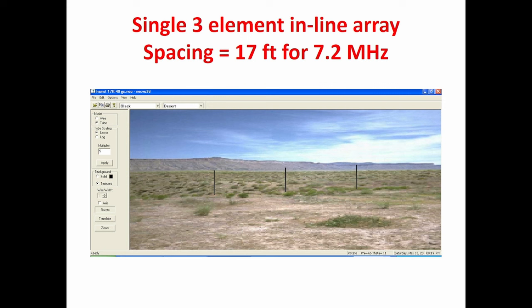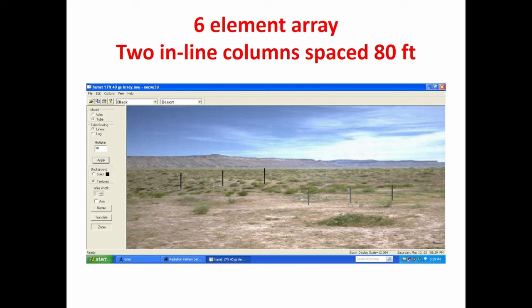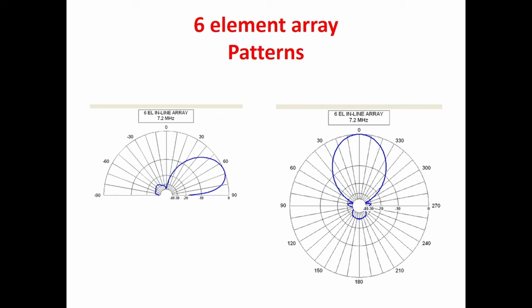Here's a GNEC model of the three-element inline array — you can make it look realistic in GNEC. The pattern from three inline hamsticks at 17-foot spacing is quite good: down 30 dB in elevation and 30 dB off the back. Then I spaced two of these arrays 80 feet apart — six elements total in two inline columns — and the pattern in azimuth is really excellent as well. It's very close to, and maybe even better in some respects than, what a Beverage antenna would give.